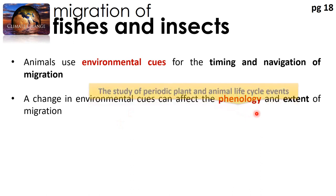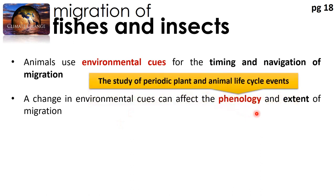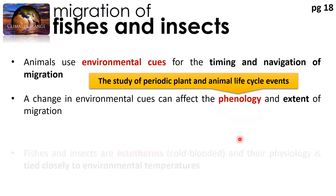What is phenology? Phenology is actually the study of periodic plant and animal life cycle events. So whenever we say that an animal or plant's phenology is affected, we are referring to their life cycle events — their phenology is affected by climate change.